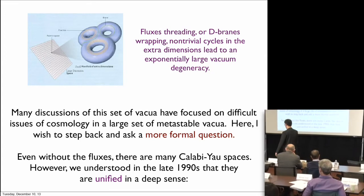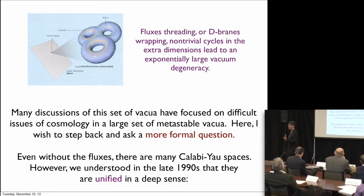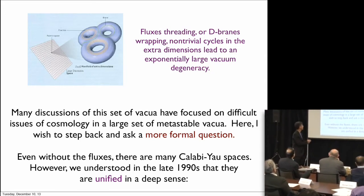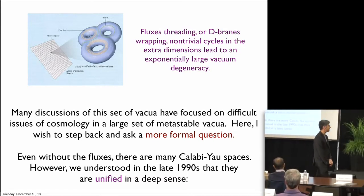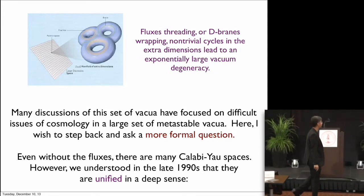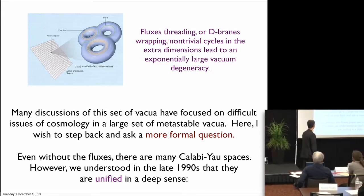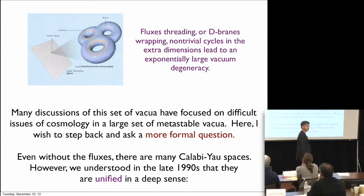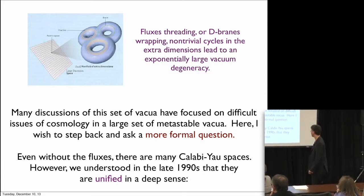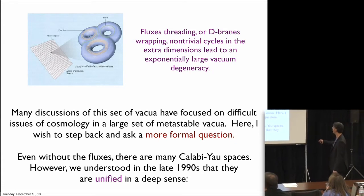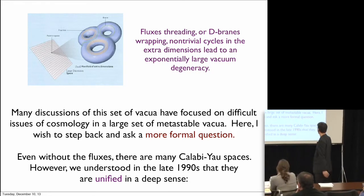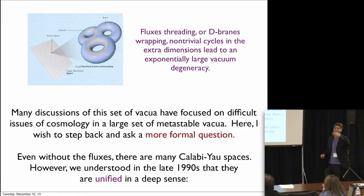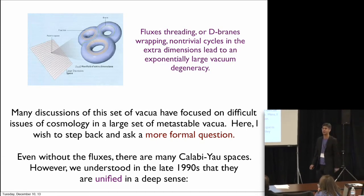The current belief — well-controlled in some small set of cases — is that these give some exponentially large vacuum degeneracy. Many, maybe most, certainly at Stanford most, of the discussions of this set of vacua have focused on very difficult but very interesting issues of cosmology, in a large set of metastable vacua of the sort that breaks supersymmetry. In my talk, I'm going to take a step back and set up a more formal question — maybe less ambitious, but still involving things that I think will take us 50 years into the future without total resolution.